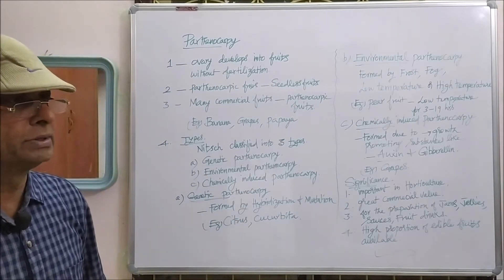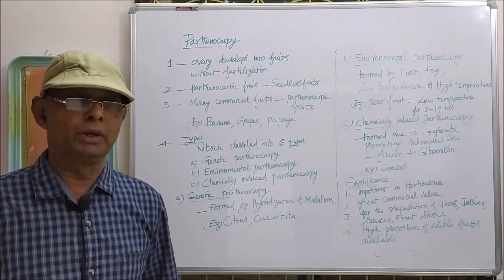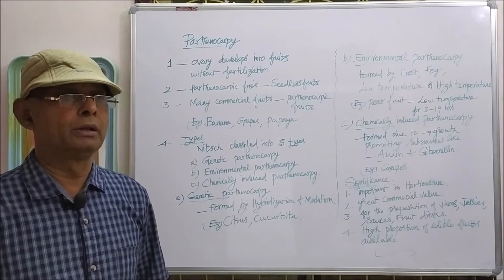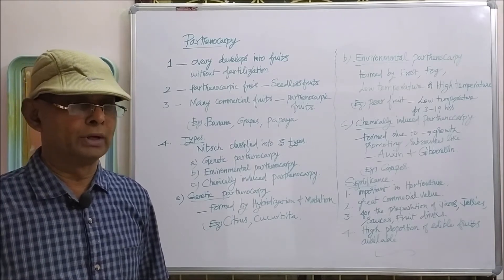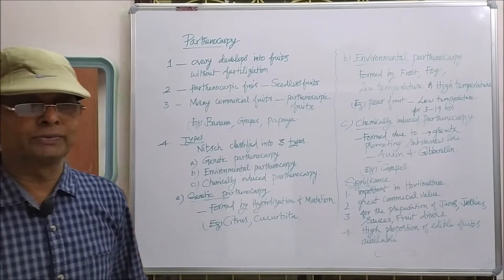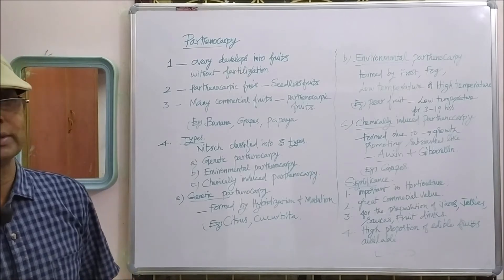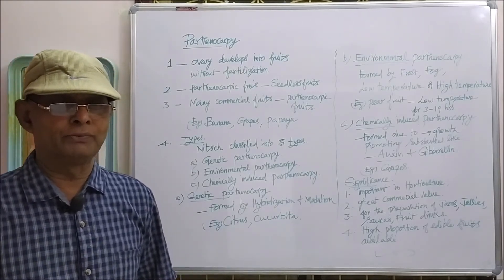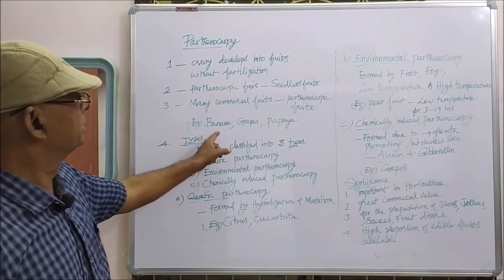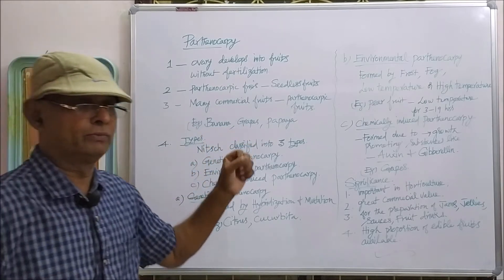Parthenocarpy fruits are seedless fruits because seed formation takes place only after fertilization. When fertilization takes place in the ovary, then only the fruit will develop seeds. Such fruits are called seedless fruits. Seeds are not produced in Parthenocarpy fruits because they are not formed without fertilization. Many commercial fruits are made seedless — for example, banana, grapes, papaya. These are the main fruits which do not contain seeds.